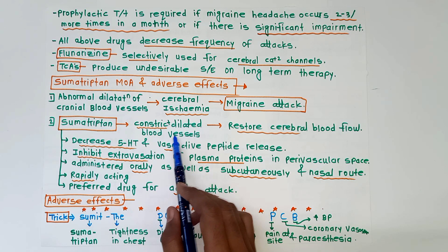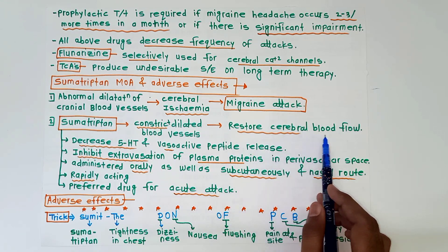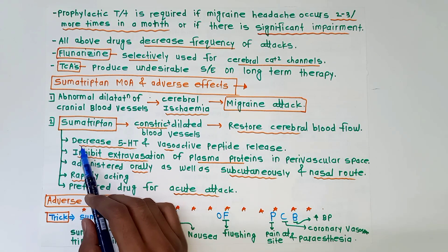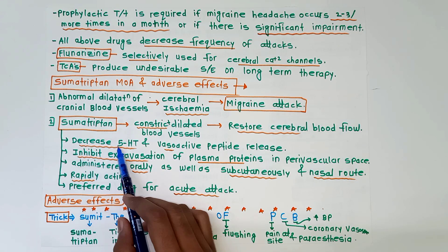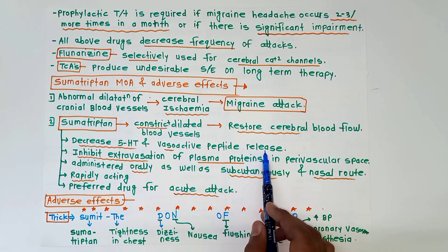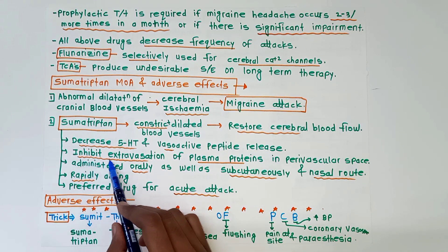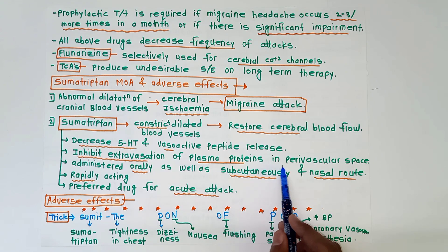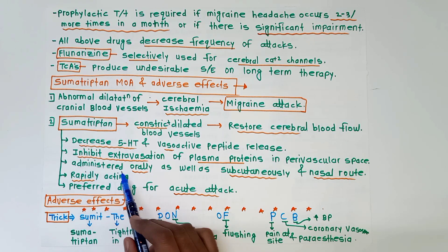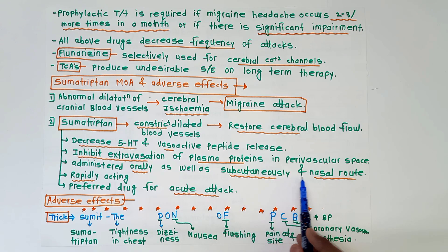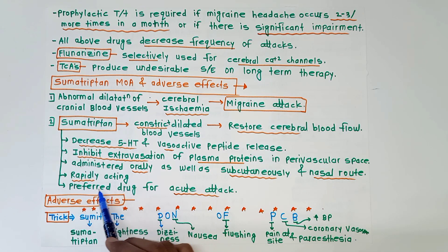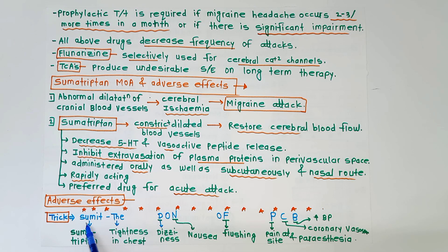Sumatriptan constricts the dilated blood vessels and restores cerebral blood flow. It also decreases 5-HT and vasoactive peptide release like histamine, and inhibits extravasation of plasma proteins in the perivascular space. It is administered orally, subcutaneously, and via the nasal route. It is rapidly acting and is the preferred drug for acute attack of migraine.